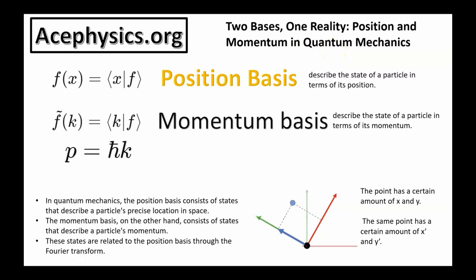In quantum mechanics, there are two fundamental bases that any wave function can be decomposed into: the position basis and the momentum basis. The position basis describes the state of a particle in terms of its position. The momentum basis describes the state of a particle in terms of its momentum. We'll explain this nomenclature on the next few slides.